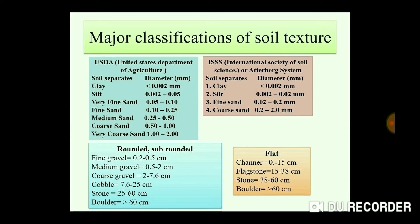According to USDA, there are 7 categories given to soil separates. But if you talk about ISSS, there are 4 categories. According to USDA, there are 5 categories designated to sand, but in the case of ISSS, only 2 categories have been designated to sand.